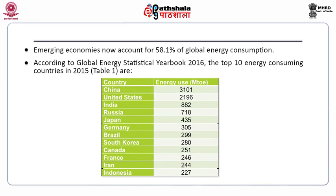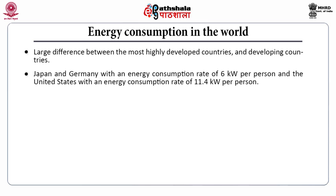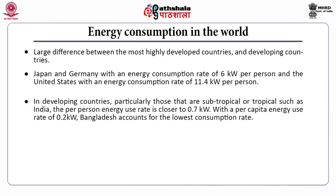The energy consumption is loosely correlated with gross national product and the climate. But there is a large difference even between the most highly developed countries, such as Japan and Germany with an energy consumption rate of 6 kilowatt per person, and the United States with an energy consumption rate of 11.4 kilowatt per person. In developing countries, particularly subtropical or tropical countries like India, the per person energy use rate is closer to 0.7 kilowatt only.